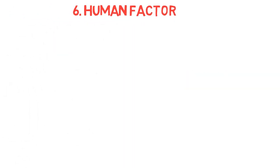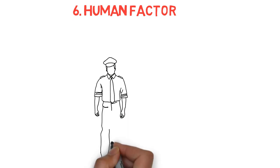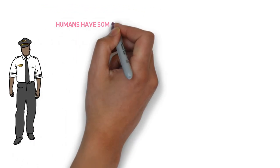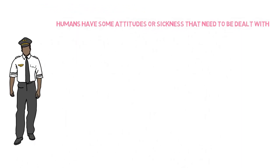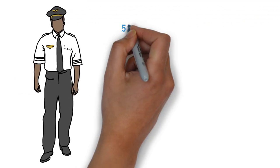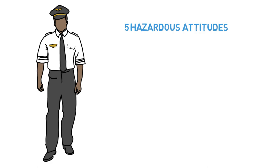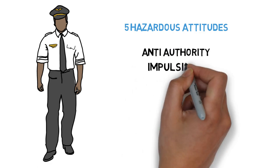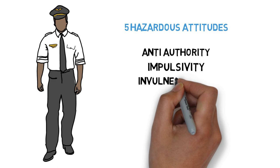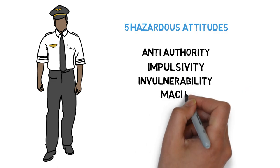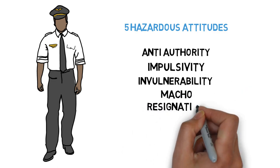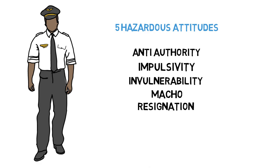Number six, human factor. Humans are the ones who fly the airplane. Humans have some attitudes or sickness that can affect flying. There are five hazardous attitudes that people found out are the most common: anti-authority, impulsivity, invulnerability, macho, and resignation. There are antidotes to those hazardous attitudes and you need to memorize these five.